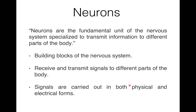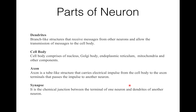Today we discussed what neurons are — the building blocks and fundamental unit of the nervous system, specialized to transmit information to different parts of the body. The four basic parts are: dendrites, which are branch-like structures that receive messages from other neurons and allow transmission to the cell body; the cell body, comprising nucleus and organelles like Golgi body, endoplasmic reticulum, and mitochondria; the axon, a tube-like structure that carries electrical impulse from the cell body to the axon terminal; and the synapse, a chemical junction between the terminal of one neuron and the dendrites of another.